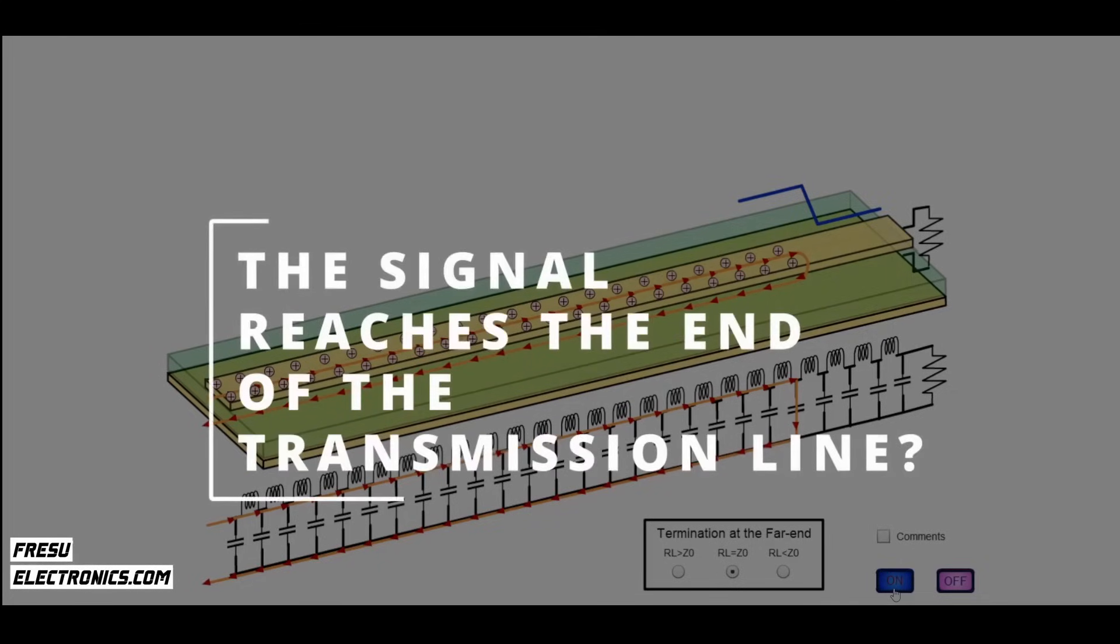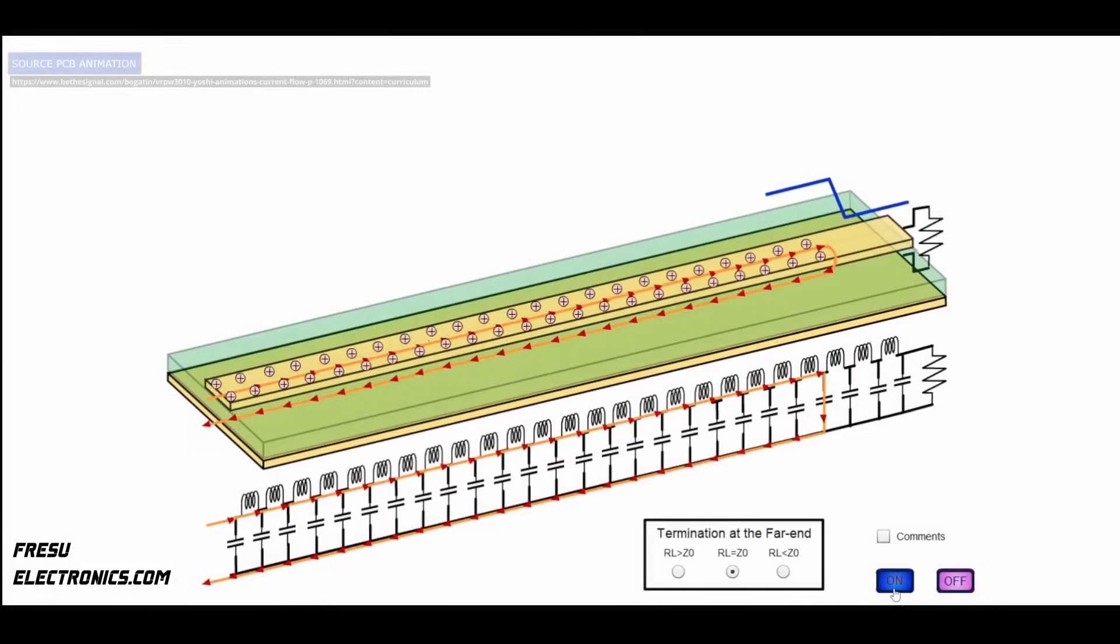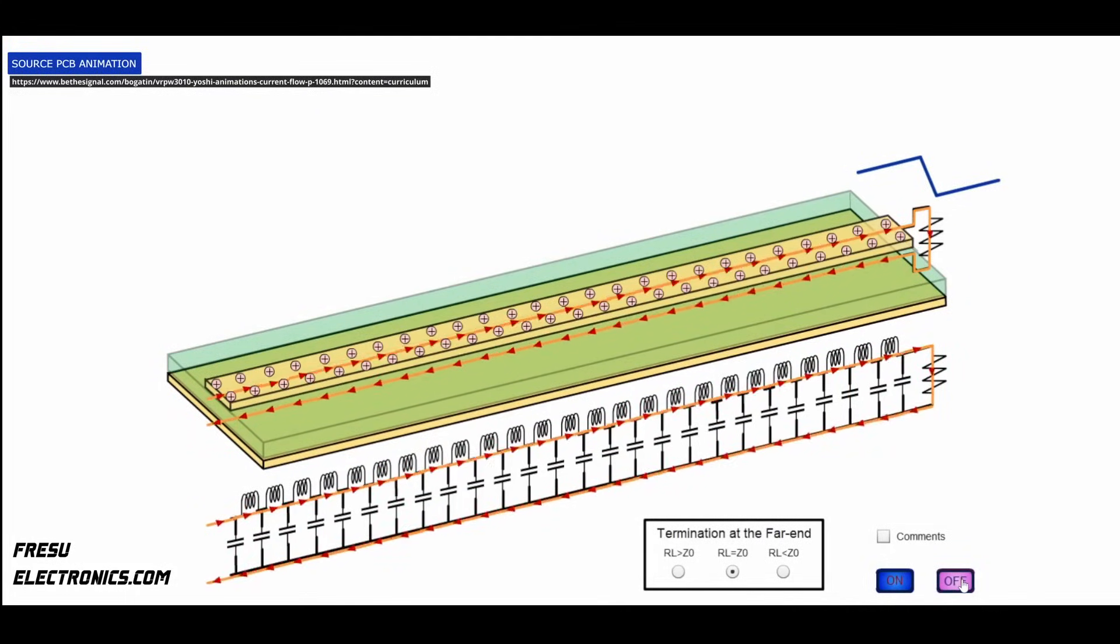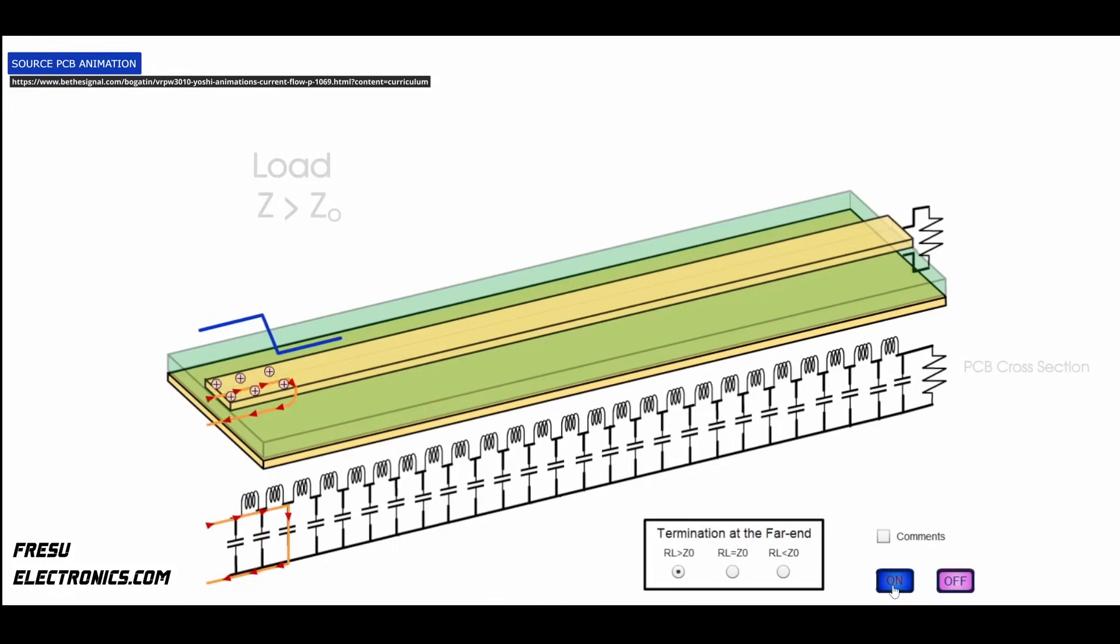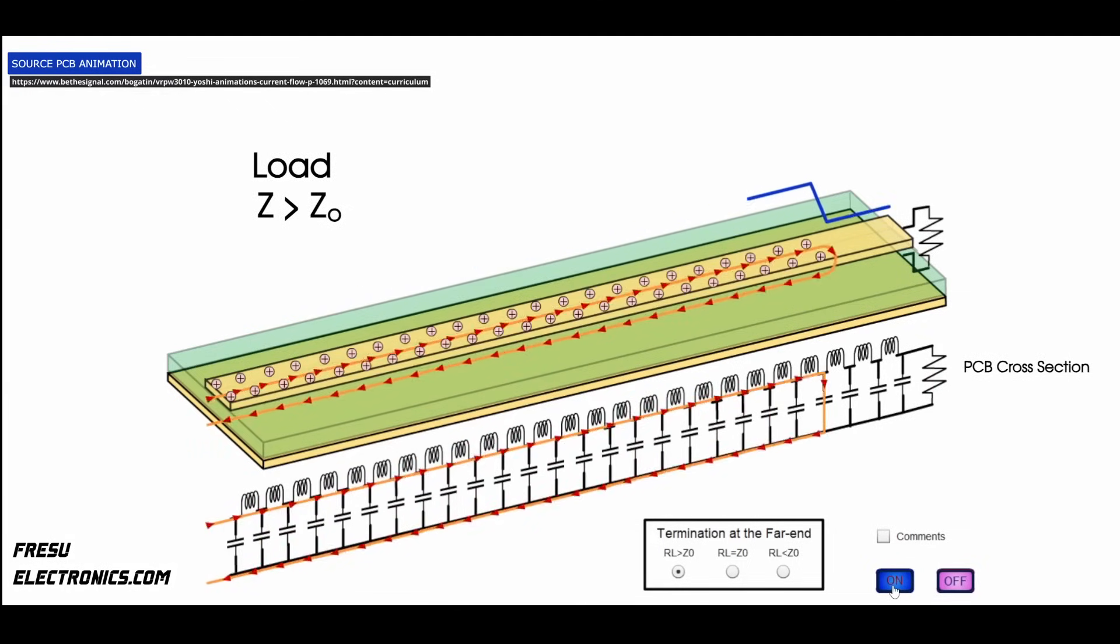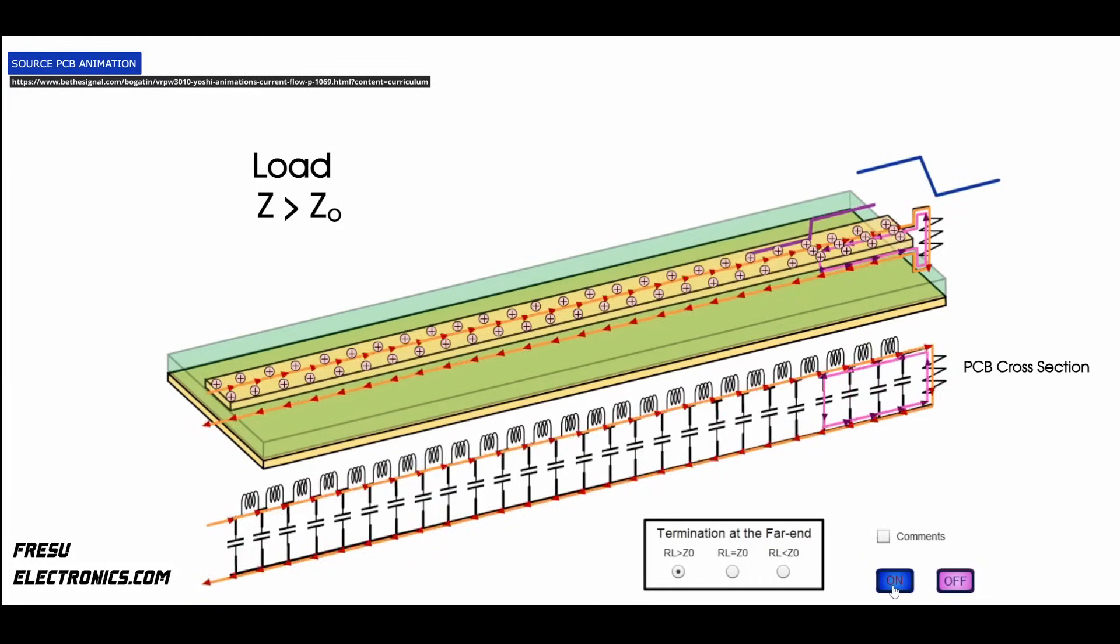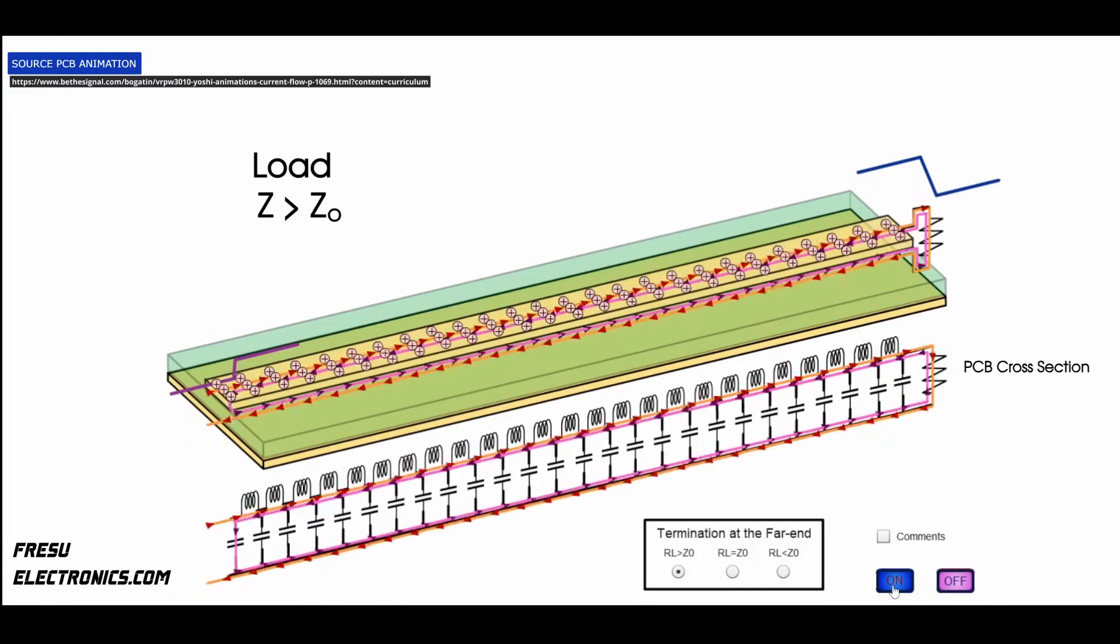What happens when the signal reaches the end of the transmission line? This outcome is determined by how well the connected load's impedance matches the transmission line's characteristic impedance. If there's a mismatch, meaning the load's impedance is different from the line's, the signal will reflect back. On the other hand, if the load's impedance perfectly matches the line's impedance, there won't be any signal reflection.